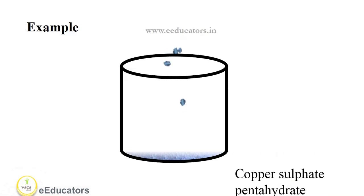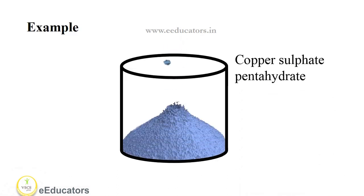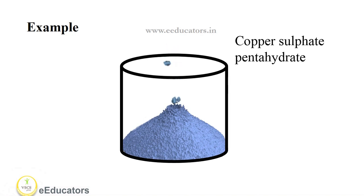For example, let us take copper sulfate pentahydrate, which is blue in color. It has a water of crystallization of 5, meaning it contains 5 water molecules.